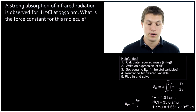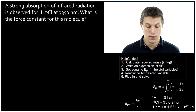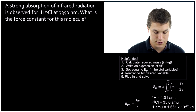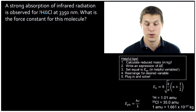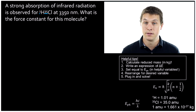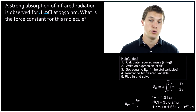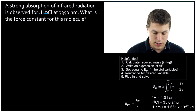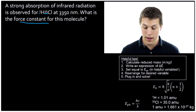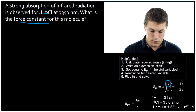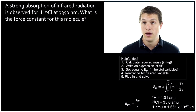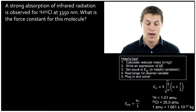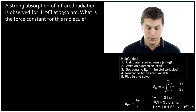What do these problems look like? Here's one: a strong absorption of infrared radiation is observed for HCl at 3,350 nanometers. Notice it also tells us the isotopes — hydrogen with one thing in the nucleus, and the isotope of chlorine with 35 things in the nucleus. The reason it specifies isotopes is because when we change the mass, we change the solutions to those energy levels, so we need to know exactly which isotope we're dealing with. The question asks: what is the force constant for this molecule? That's asking for K.